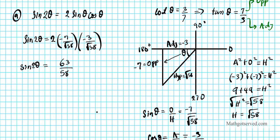Actually, this needs to be corrected — it's 42, not 63. So sine 2θ is 42 over 58. Dividing top and bottom by 2, this reduces down to 21 over 29.